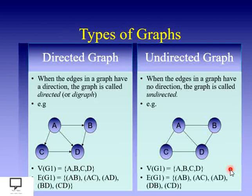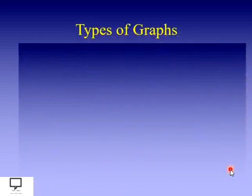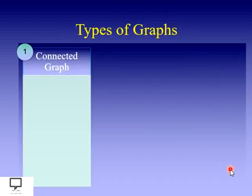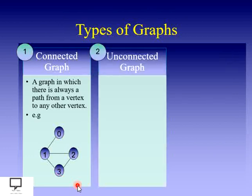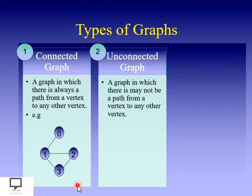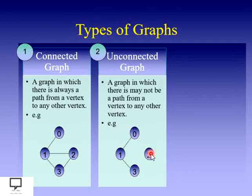I can represent both graph types like this. In a connected graph, all vertices are connected — if I want to find a path from one vertex to another, I can find it. In an unconnected graph, if any vertex is not connected, it forms an unconnected graph. Here you can see that there is no connection from 0 to 2, 1 to 2, or 3 to 2, as vertex 2 is totally isolated.